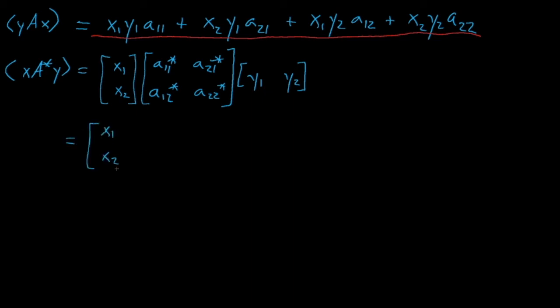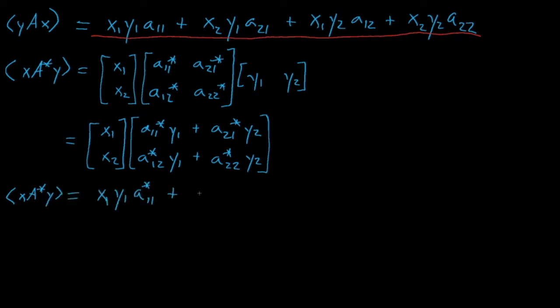A* operating on y becomes A*₁₁y₁ + A*₂₁y₂. And then on the bottom, we have A*₁₂y₁ + A*₂₂y₂. After we multiply this expression by the x vector, we get x₁y₁A*₁₁ + x₂y₁A*₁₂ + x₁y₂A*₂₁ + x₂y₂A*₂₂.